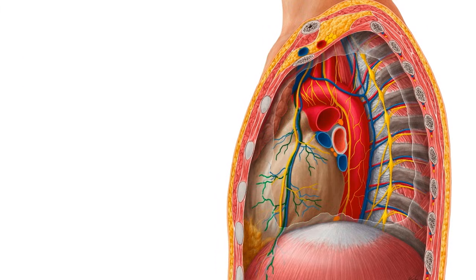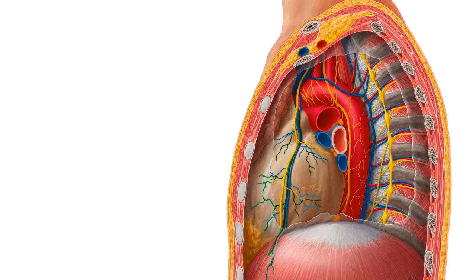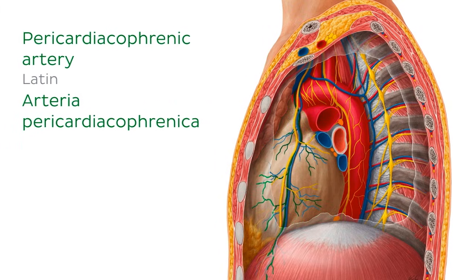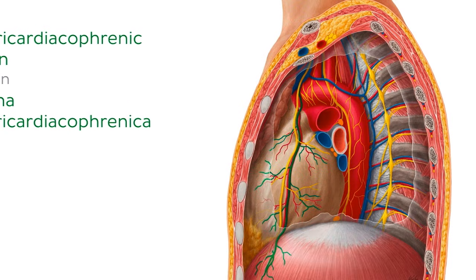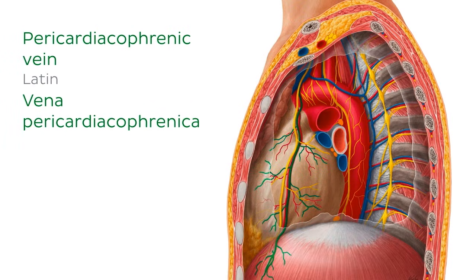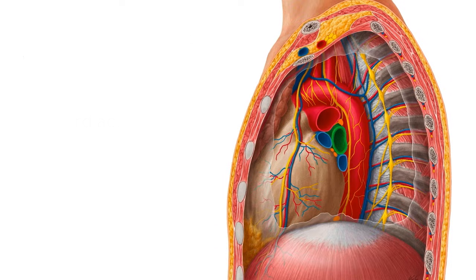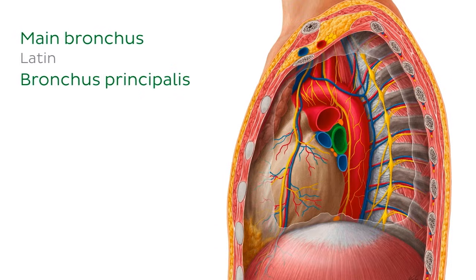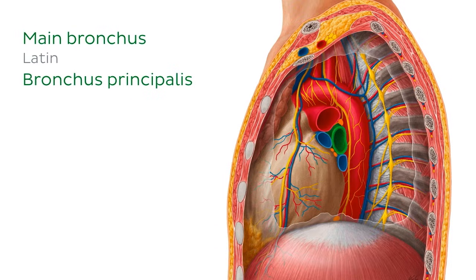Other major vasculature in this region includes the pericardiophrenic arteries, as well as its venous counterpart, the pericardiophrenic veins. The main bronchi are also considered to be part of the middle mediastinum.